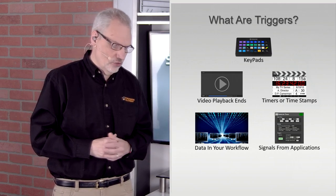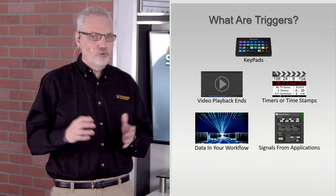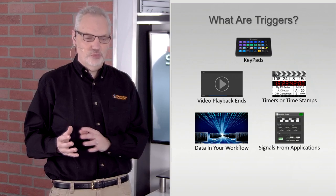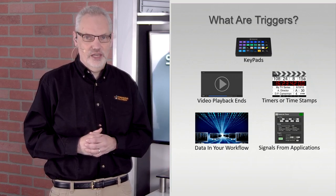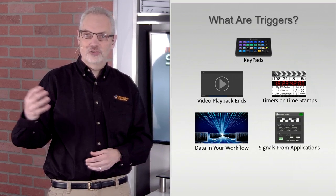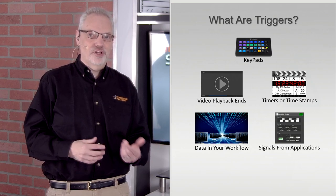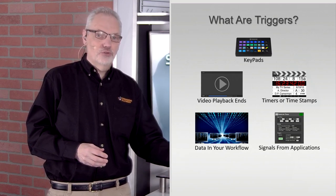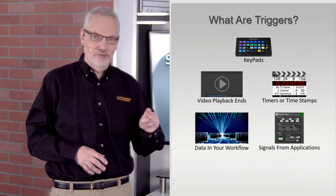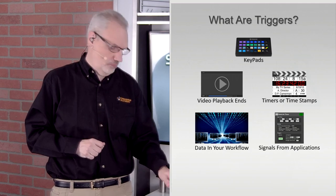The other trigger type — and this is the most significant and probably the most far-reaching in terms of its impact — is that you can actually do triggers from other applications. When we talk about artificial intelligence coming into the production space, this is where you're going to see it. You could have technology running that listens to what a host or guest is saying and, based on specific words or phrases they say, trigger certain actions to happen. Very powerful, and it will have a greater impact going forward on how automation plays out in the production space.